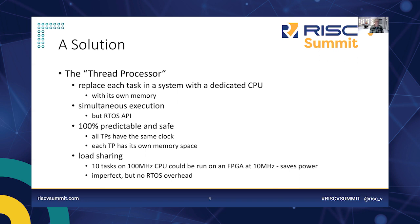Looking at what multiple cores do for performance: imagine 10 tasks running under an RTOS on a 100 MHz CPU. We could have them running at 10 MHz on thread processors. That saves power. We have no RTOS overhead, saving power, which is a real benefit.